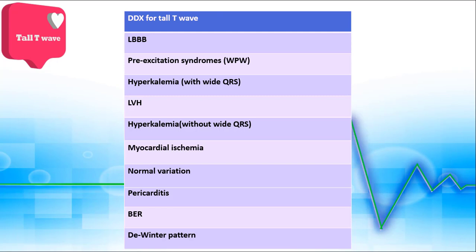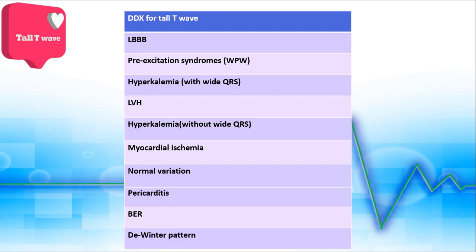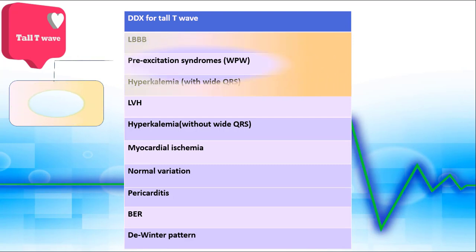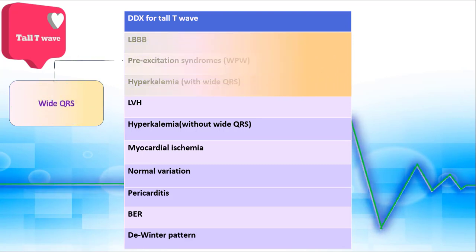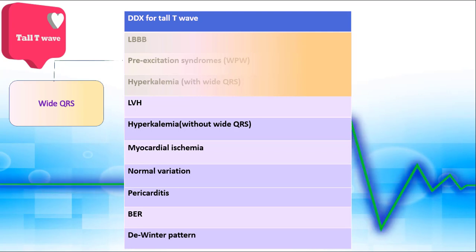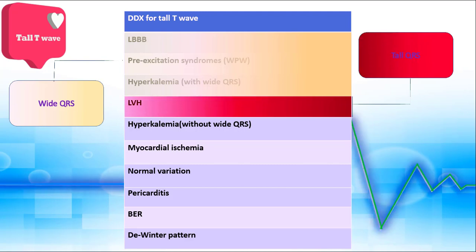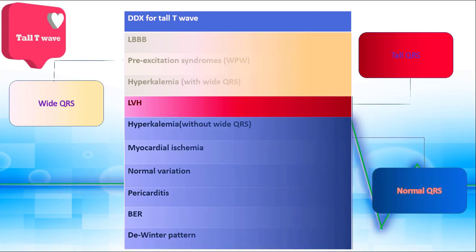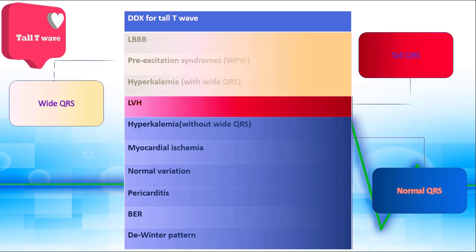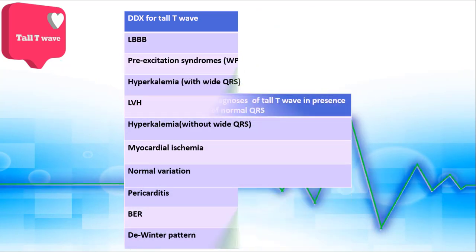QRS complex changes are very useful to determine the underlying cause. We can classify causes of tall T based on QRS complex into three main categories: first, tall T waves due to wide QRS complexes, including WPW, bundle branch block, hyperkalemia, and so on; second, tall T waves due to tall QRS complex amplitude, including ventricular hypertrophy; and third, tall T waves with normal QRS complexes, including hyperkalemia, acute ischemia, and normal variation.